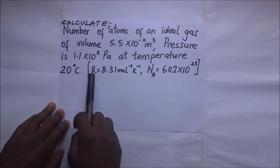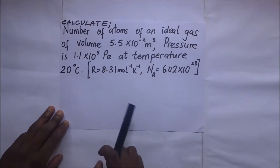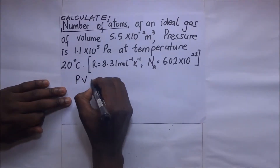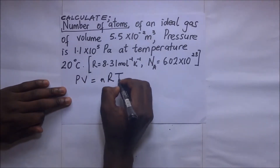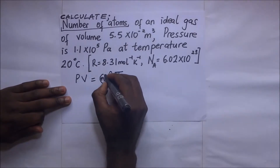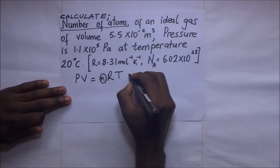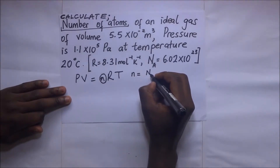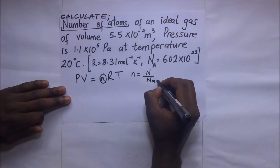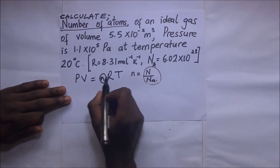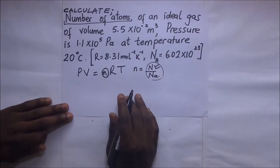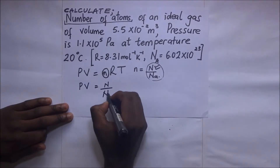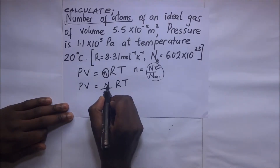In this question, they ask us to calculate the number of atoms of an ideal gas at a given volume, pressure, and temperature, given the molar gas constant and Avogadro's number. We know PV = nRT, and since n = N / N_A, substituting gives PV = (N / N_A) × R × T.